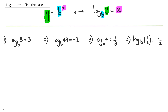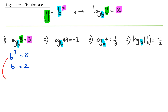With the first question, because we're actually finding the base, we're looking to figure out what the light blue colored b is. The first step is to rewrite it in exponential form. The base is b and the power is 3, so we've got b to the power of 3 equals 8. If you've been doing Level 1 algebra you already know that 2 cubed is equal to 8, so you can put straight away b equals 2. I'm also going to show you how to do this in the calculator.